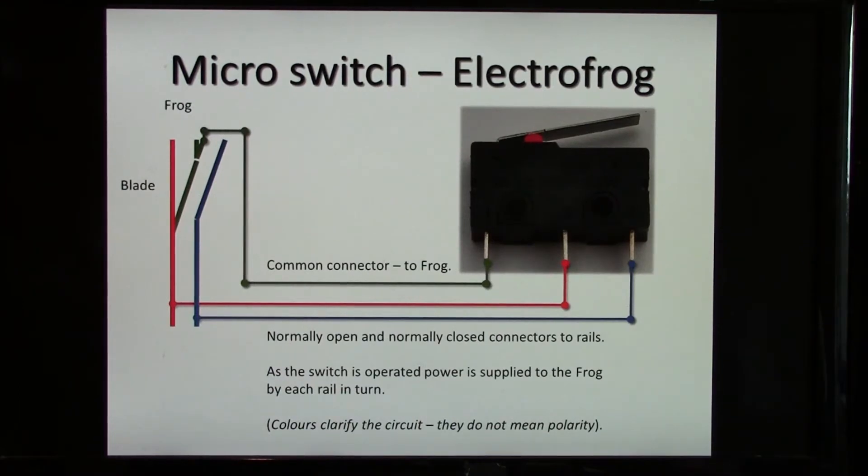Here's a basic diagram of how you would connect a micro switch to an ElectroFrog. The common would be connected to the frog, and one wire from each rail would connect to the normally open and normally closed terminals. Connect the frog to the common and connect each rail to the center and right-hand connector. This will give you basic frog switching.